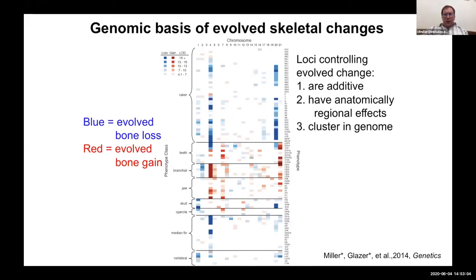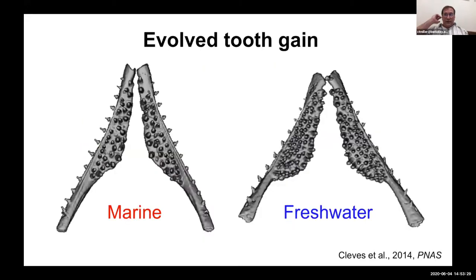In general, we found that the loci affecting evolved changes in skeletal pattern are additive, with intermediate effects in heterozygotes. The loci have specific anatomically regional effects and cluster in the genome — chromosomes 4, 20, and 21 are enriched for controlling many different skeletal traits. But the trait I want to tell you about today is evolved increases in tooth number, which I'm calling evolved tooth gain.